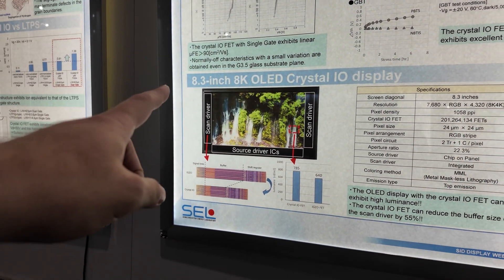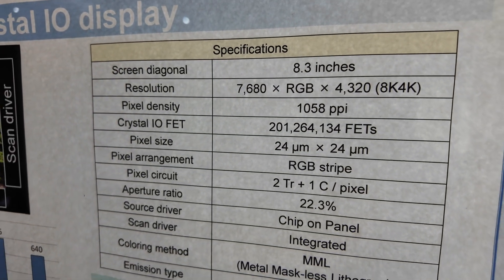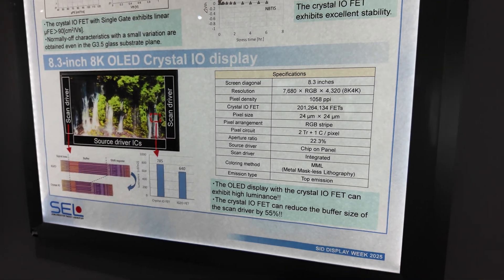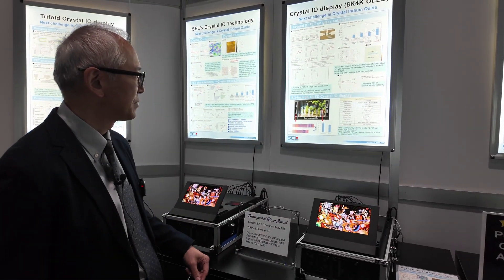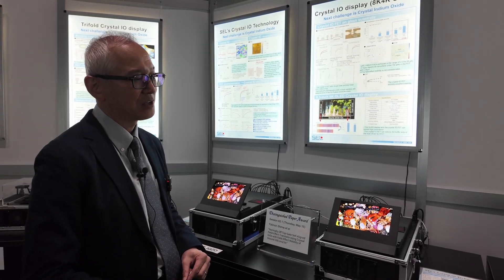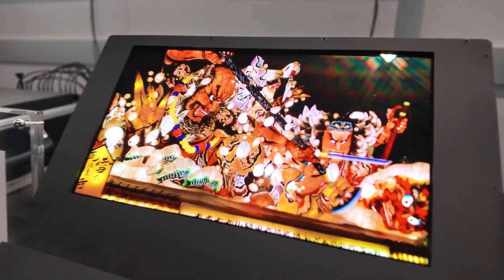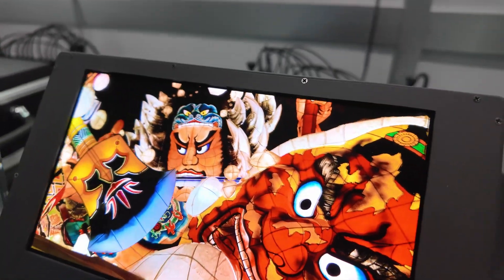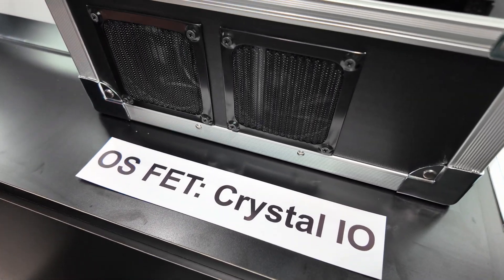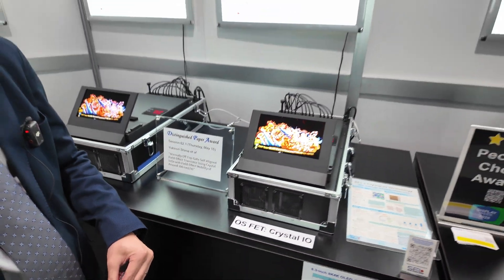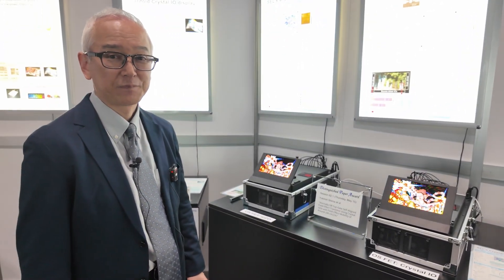And it's an 8.3-inch 8K OLED display — very high resolution, just to show the top of what can be done. This is the 8K display, and as far as I know, this is the smallest 8K display at this moment. And one of the things — using Crystal I.O., it's one of the first demonstrations in the world. It's the first time shown here at Display Week 2025.